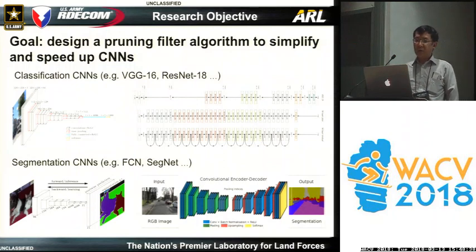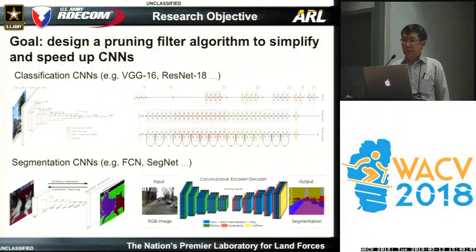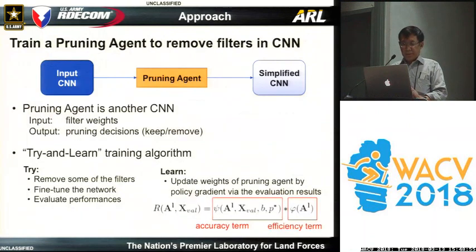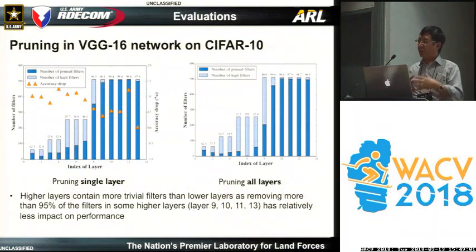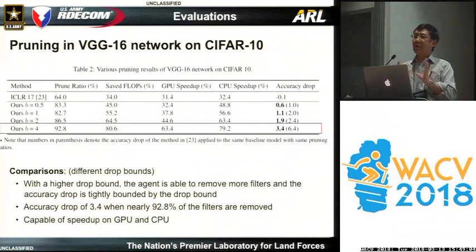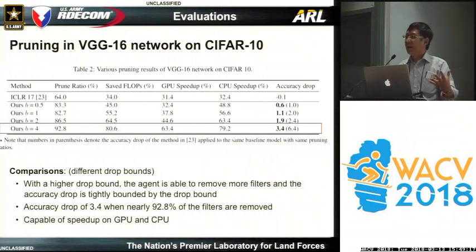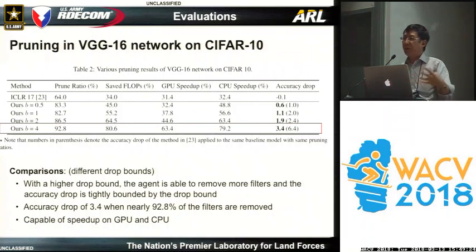So the key idea that we have developed, the development of the algorithm, is to try to prune the filters. The application target is classification and also segmentation. This is our approach — we have developed an algorithm we call the pruning aging. This aging works like a trimmer, trying to trim the original network to get a simplified version. Basically, this aging is also a learning network, combining the trimming of the weights and trimming the feature numbers together.